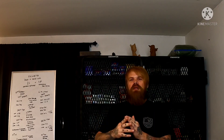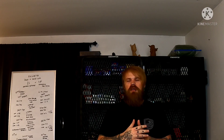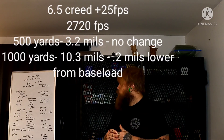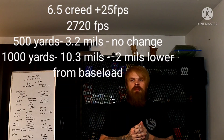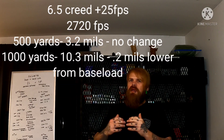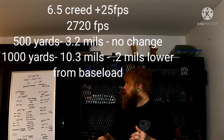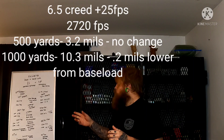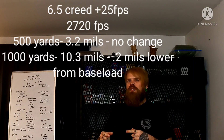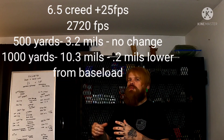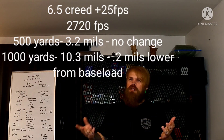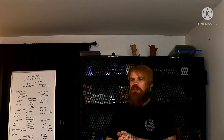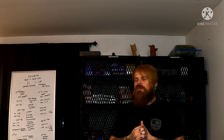On the Creedmoor we'll go high side first. At +25 fps, 500 yards is still 3.2 mils — no standard deviation there. However at 1000 yards we're at 10.3 mils, giving us a standard deviation of 0.2 mils less than our initial load. That 0.2 mils at 1000 yards could determine whether we go in the dirt or over the top.